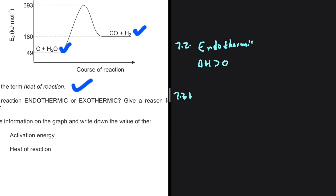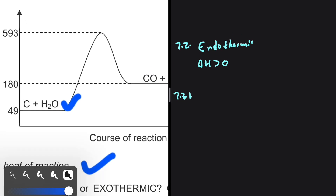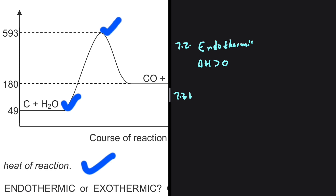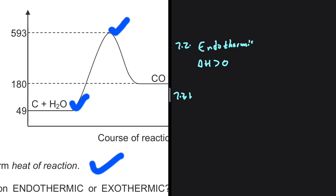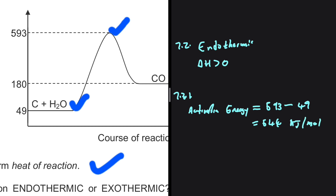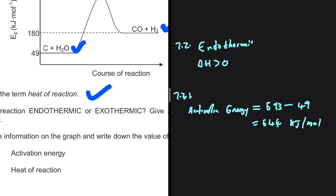The next question asks you to calculate the activation energy. The activation energy equals the energy at the activated complex minus the energy of the reactants. That is 593 minus 49 kilojoules per mole, which equals 544 kilojoules per mole — that is our activation energy.